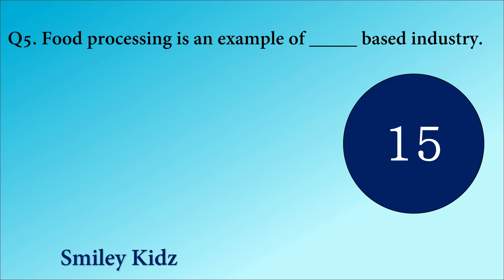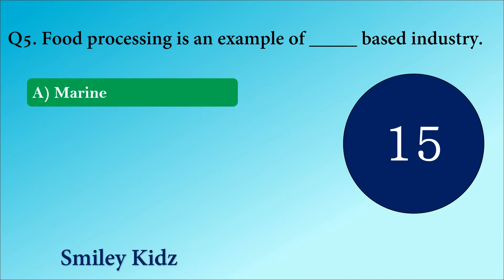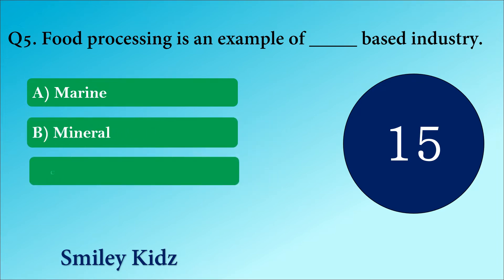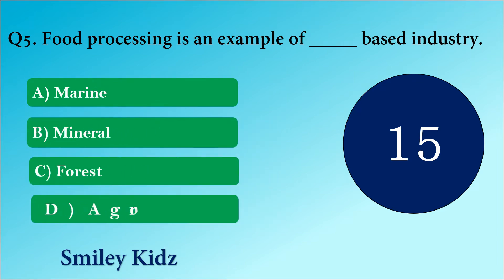Question number 5. Food processing is an example of Dash based industry. The options are A. Marine, B. Mineral, C. Forest or D. Agro.